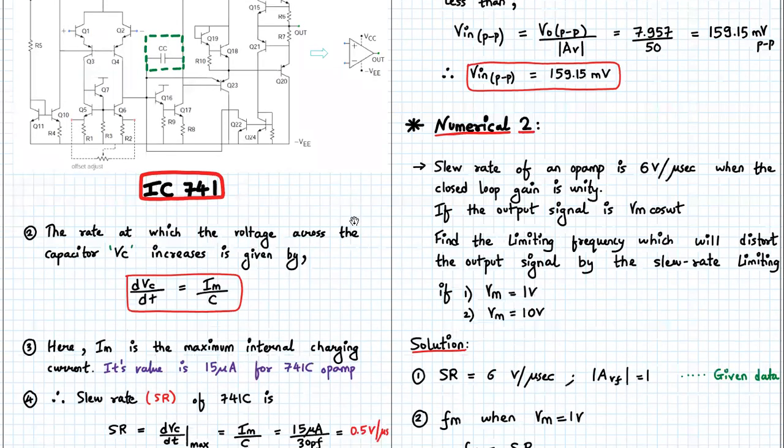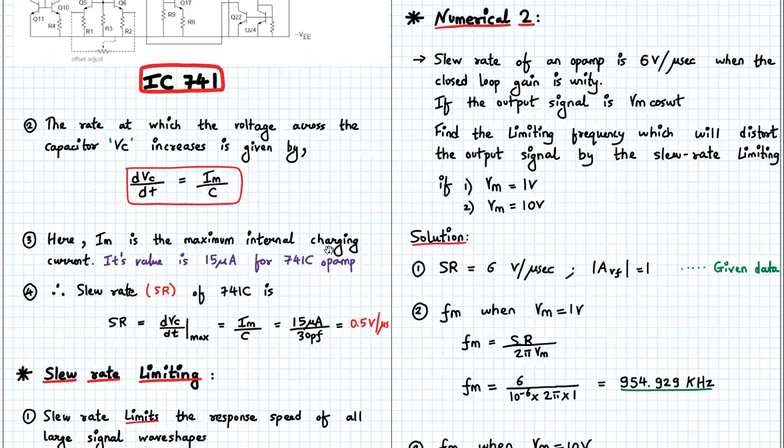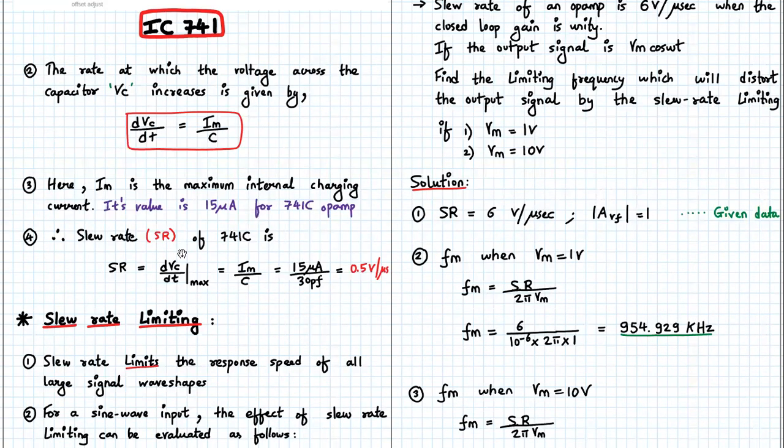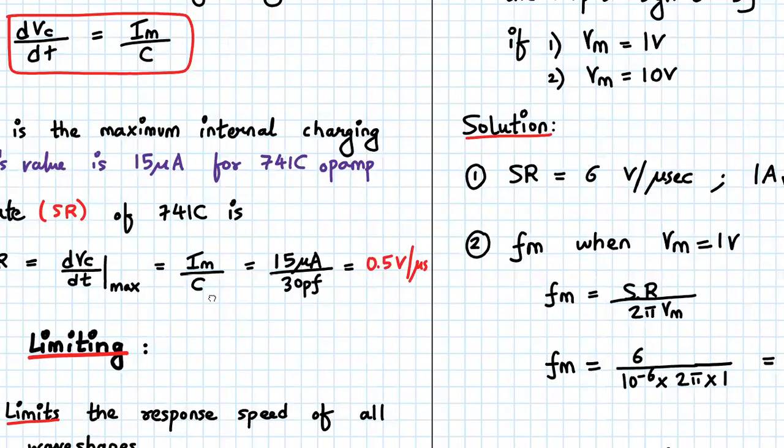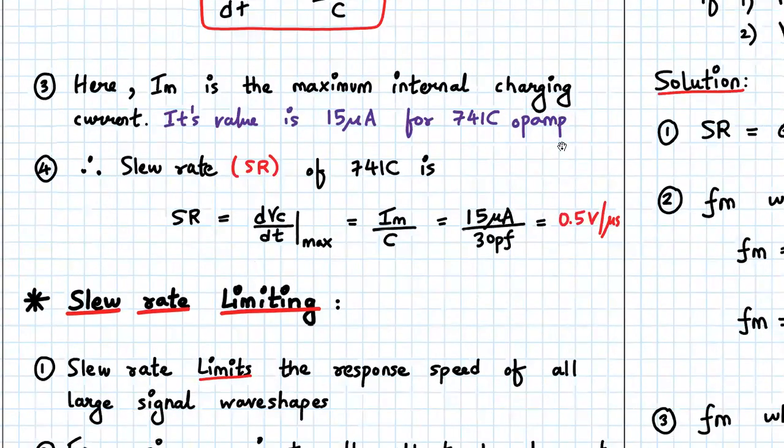Now, the rate at which the voltage across the capacitor Vc increases is given by dVc by dt equals IM upon C, where IM is the maximum internal charging current with a value 15 micro amperes. So if you divide this, you will get 0.5 volts per microsecond. Okay, so we have seen the definition of what is a slew rate concept and what causes slew rate basically.